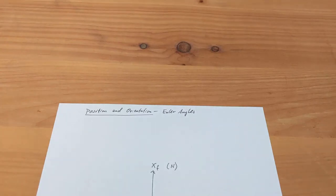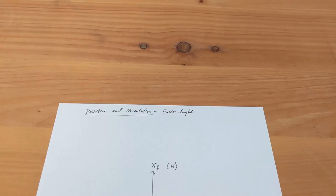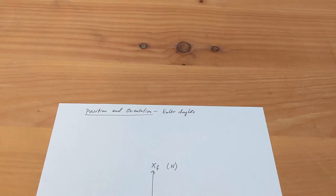We're now going to discuss position and orientation — how we define the orientation of the aircraft relative to the Earth. We're going to use something called Euler angles, though this isn't the only way. For those taking the flight simulation course, we'll cover other ways, including quaternions, where the mathematics works out really beautifully. But Euler angles are used in a lot of flight dynamics books and software, partly because they're really intuitive.